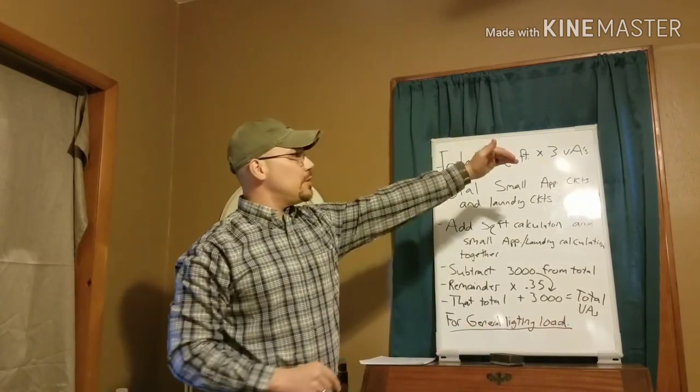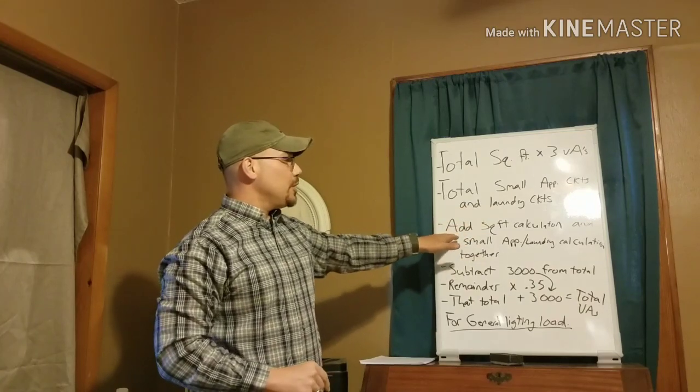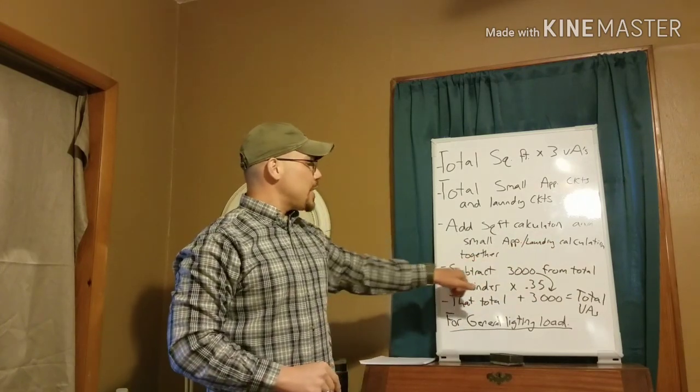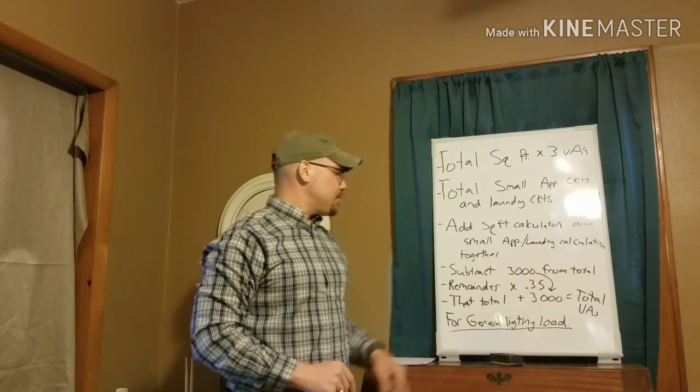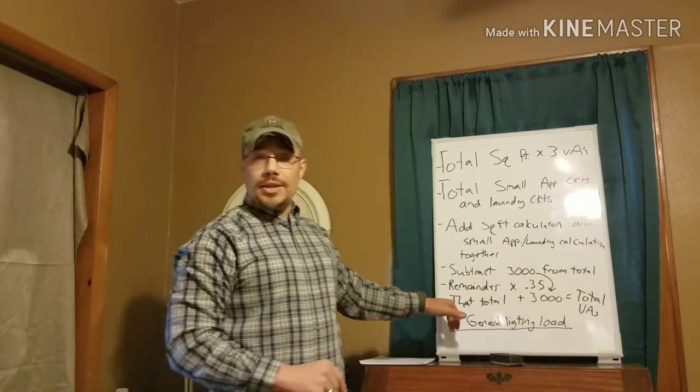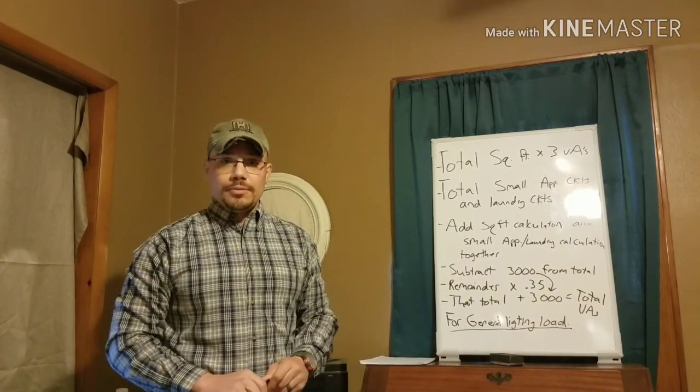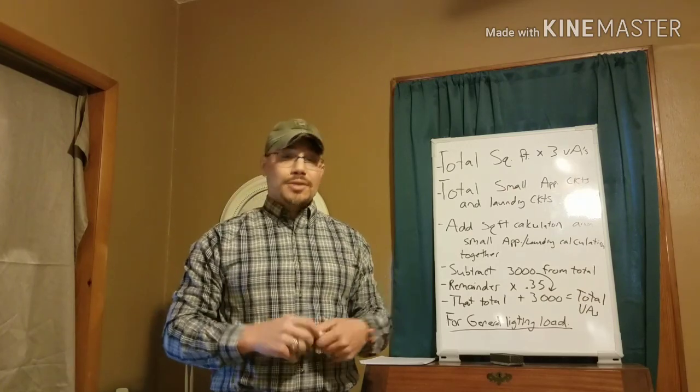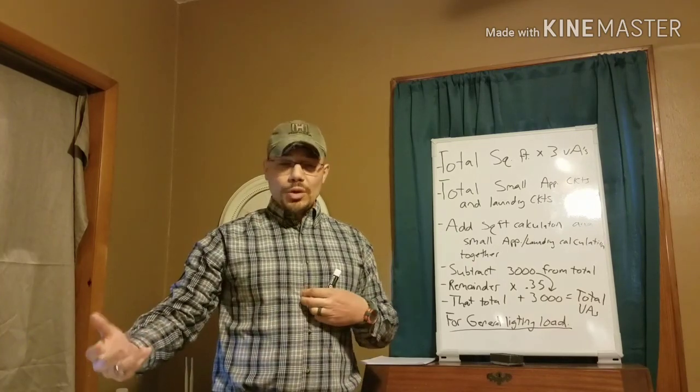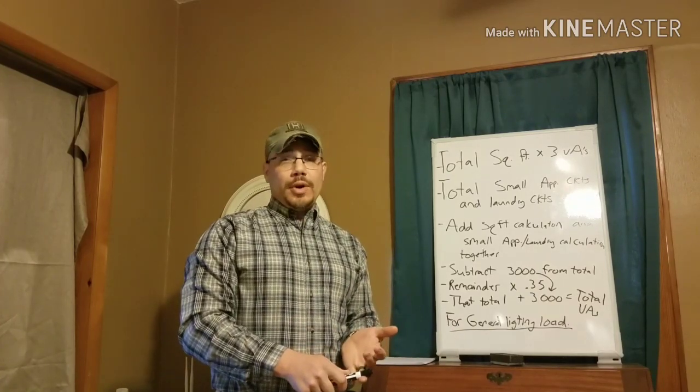So we take our total square feet and run through it again. Total square feet times 3 VAs per square foot. So there's the way to think about it: total square feet times 3 VAs, total small appliance circuits and laundry circuits times 1,500 VAs. You're going to add your square feet calculation and your small appliance laundry circuit calculation together. Subtract 3,000 from that total. The remainder after that 3,000 is gone times 0.35. Then you take that total plus your 3,000 back in for your total VAs for your general lighting load. I hope this made sense. Like I said, this is just a general lighting load portion of the load calculations. The next video I'm going to talk about is going to be our dryer and then also our range calculations.